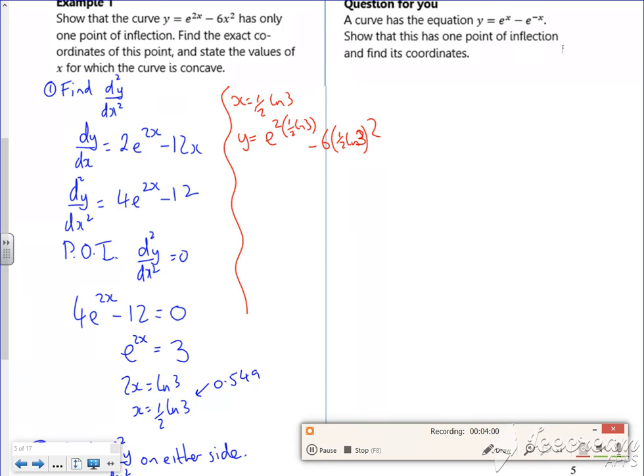I get out. So the half and the 2 cancel. The e and the ln cancel. So I get a 3. I've got 6 times a quarter is 3 over 2. And then ln of 3, which is all squared, which I can't do anything with. So the coordinate would be a half ln 3 comma 3 minus 3 over 2 ln 3 all squared. So that's that part of it.